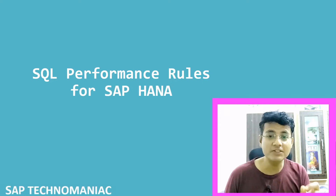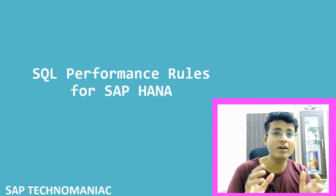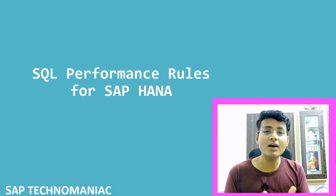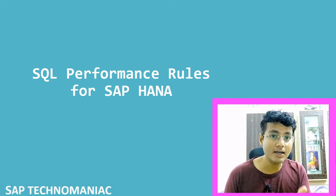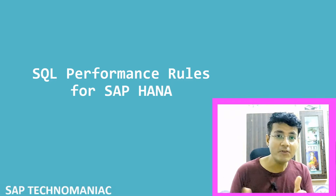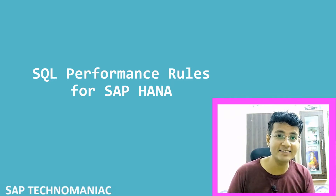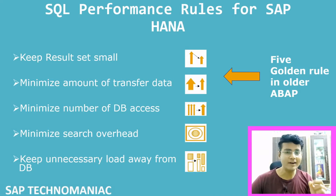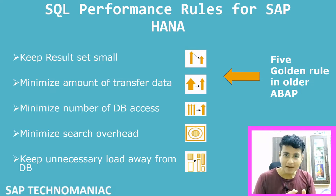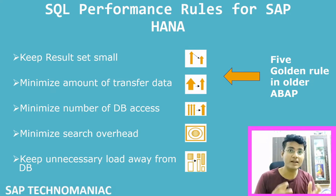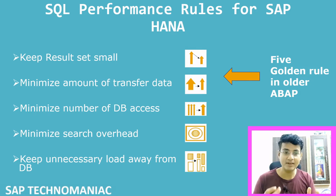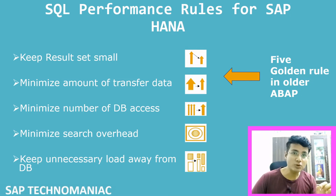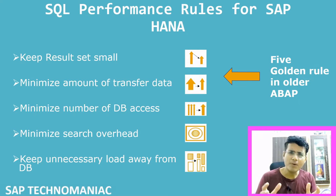In this video we will see SQL performance rules on ABAP on HANA. We will see what rules we were following whenever we are writing the select query on other databases, and what we have to follow on the HANA database. There were five golden rules in older ABAP, and these rules are still valid in ABAP on HANA — some are more important and some are less important.